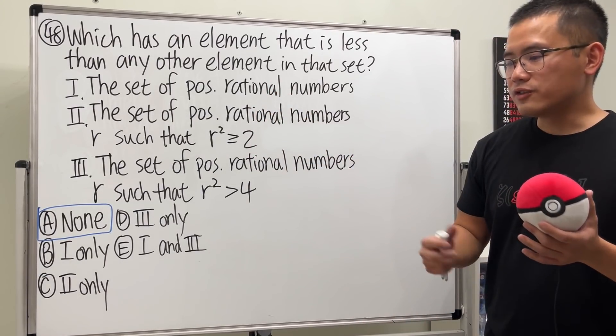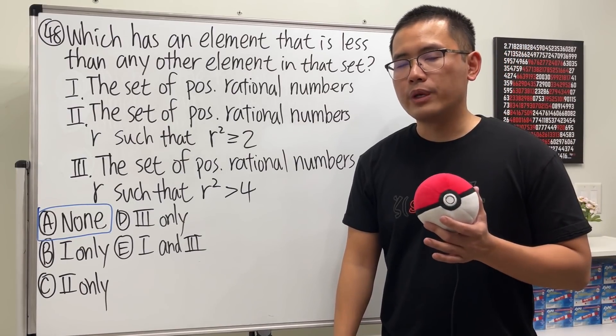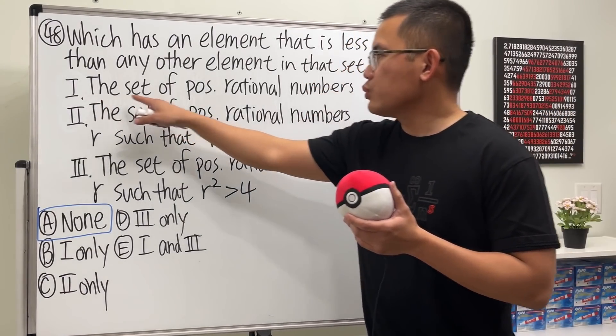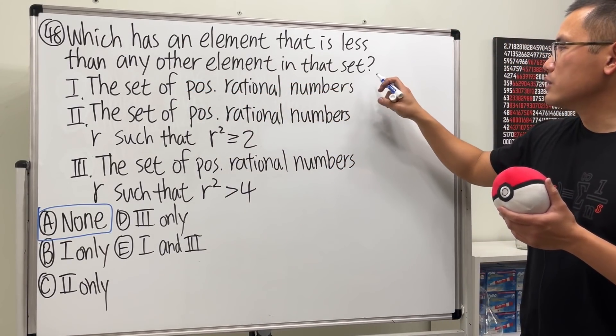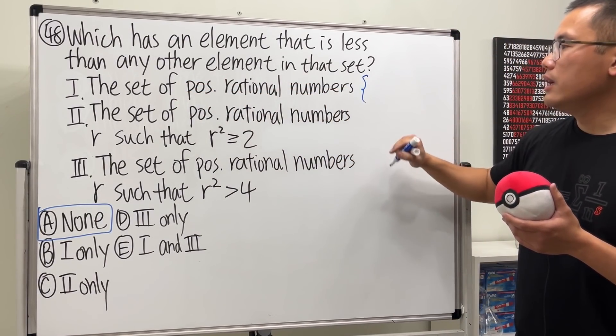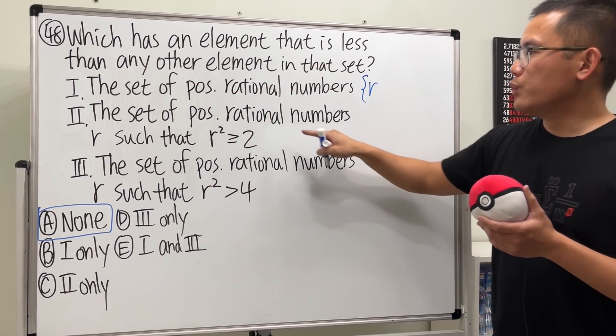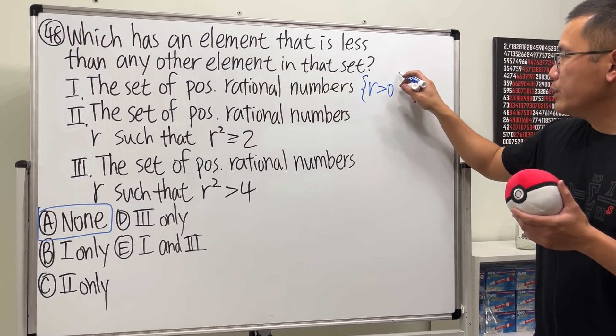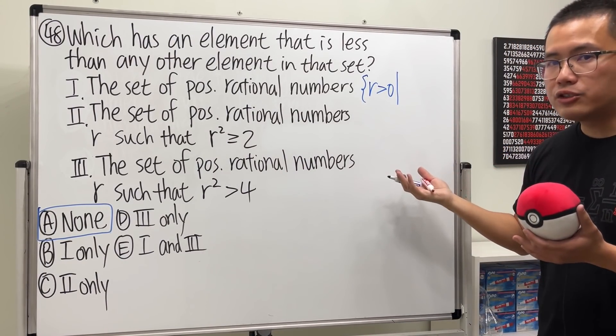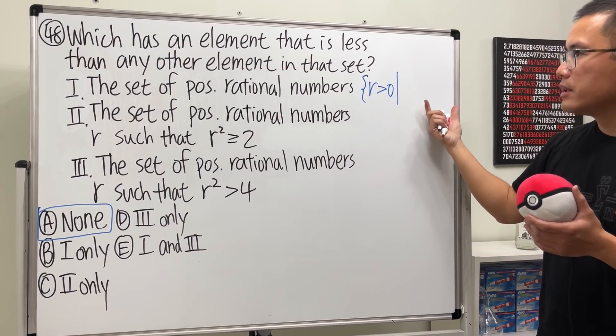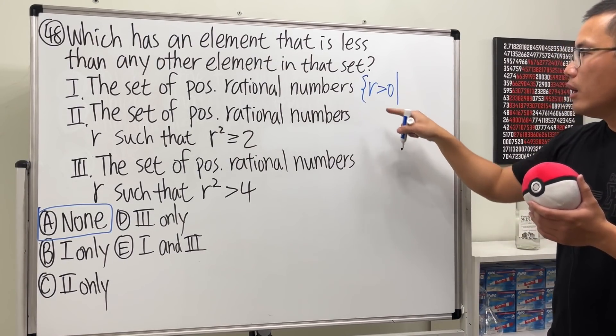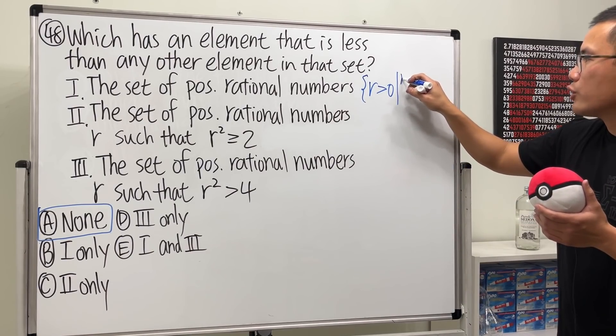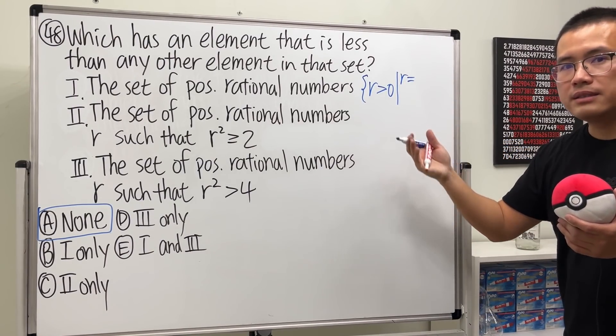We have these options, and just for practice I wanted to show you guys how we can use the set builder notation to write this set. For the first one, we want a set of positive rational numbers. So here's the set builder notation. Let's use r and first we want r to be positive, so we can say r is greater than zero. And then we can put down a vertical bar meaning such that, and then we are going to put down the property of what r should be. r has to be a positive rational number. We have the positive right here already. And then for r to be a rational number, it means it has to be an integer over an integer, so we can write this as a over b.